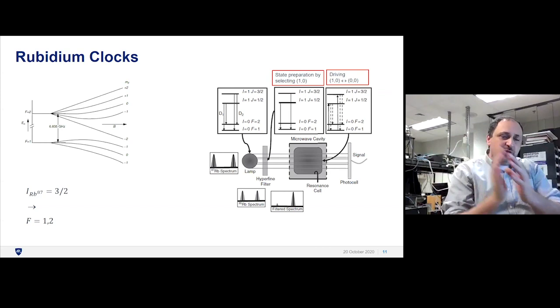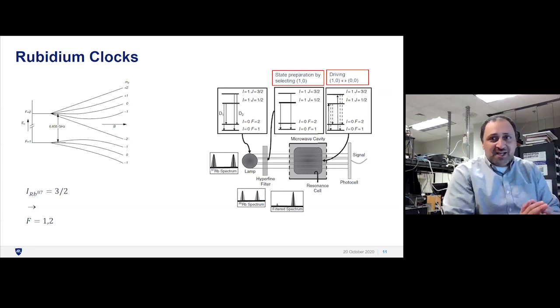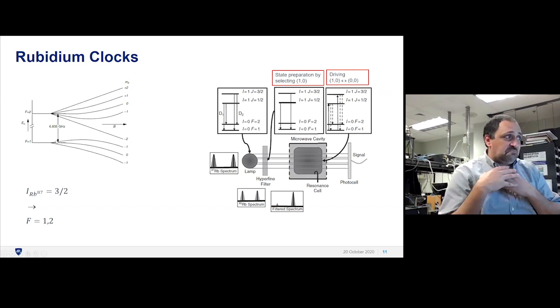If you're off that frequency, more light goes through the cell. If you're on that frequency, less light. Now you have an error signal which you can feed back to your control frequency. If you have a lot of light, you look for that minimum where you have less light. You have a place to stabilize and control. That's how you know what the frequency is. Because this frequency of that transition in zero B field is fixed.